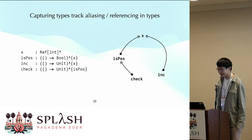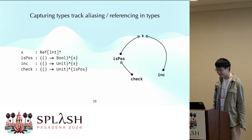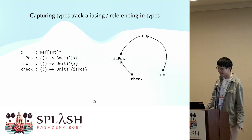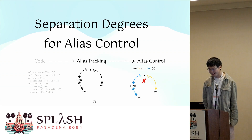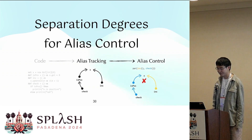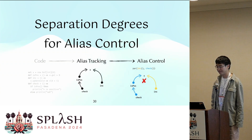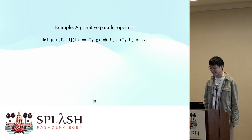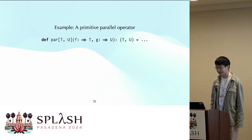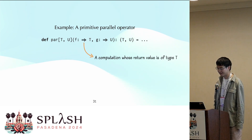Capturing types encode all aliasing and referencing relations in the types. Intuitively, it's like forming a reference graph in the type system. Now that we've gathered aliasing information in the types, we are ready for the second part: using this information to control aliases when data races become a concern. Consider a simple primitive parallel operator that runs two computations in parallel, where the double arrow T denotes a computation returning a value of type T.